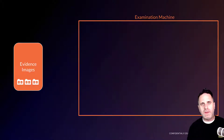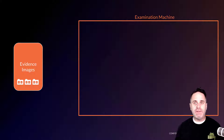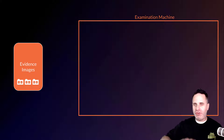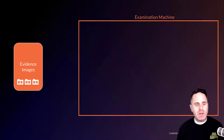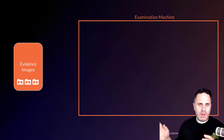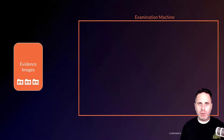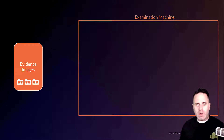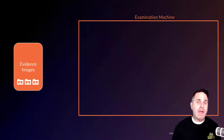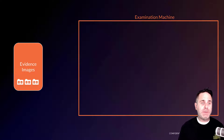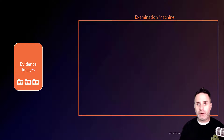We're going to start with the evidence image drive. We have our examination machine pictured as a box. When you image your evidence, you're going to put those images on a drive. A lot of times this drive will be external due to the nature of how we image drives. However, it does not have to be — it could be internal as well.